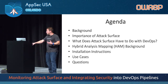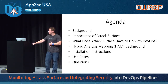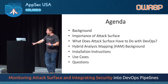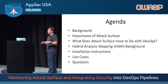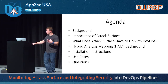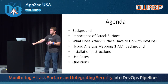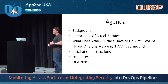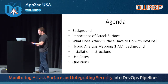We'll talk a bit about the background of the research. I'll talk about why attack surface is really important, what attack surface has to do with DevOps, and how understanding attack surface can help you better integrate security testing into DevOps. I'll cover the Hybrid Analysis Mapping technology — or HAM — which is the underlying technology we've developed. I've also got some installation instructions in the slides, and we'll look through some use cases. A lot of this will be demos that, if you're interested, you can replicate in your own environment.